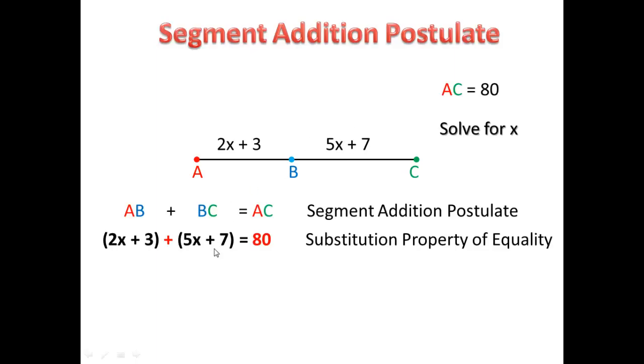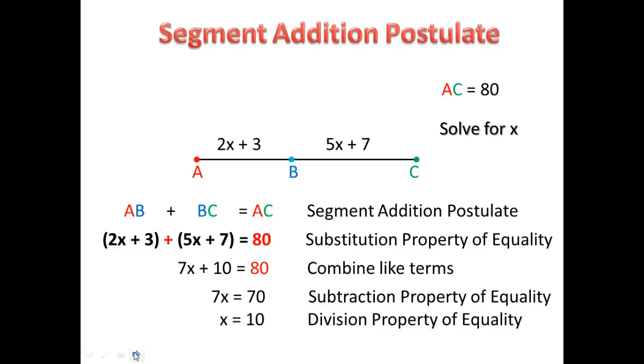Now let's combine like terms, then use the subtraction property of equality to subtract 10 from both sides, then use the division property of equality, and we're left with x equals 10.